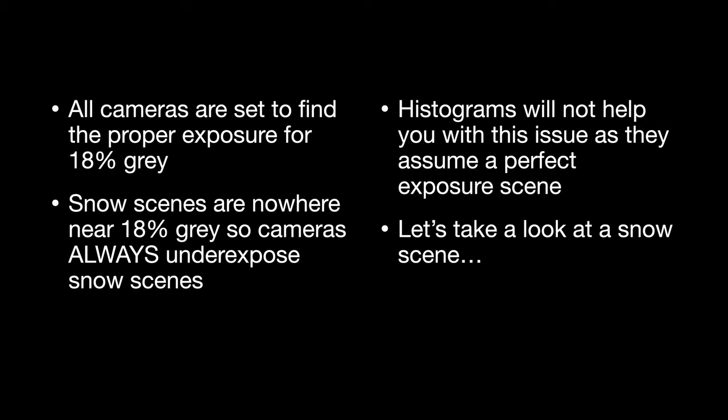First of all, all cameras are set to find the proper exposure for 18% gray. That means the light meters inside the cameras are designed to give a proper exposure for 18% gray. People's complexion — that is to say, white, Caucasian people — are 18% gray. And this is why, oftentimes, when you try and shoot African Americans or people with darker complected skin, it doesn't really work very well, and you have to open up, either by going into manual or by using exposure compensation.